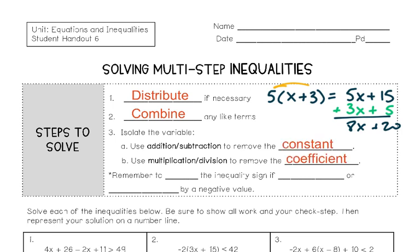The first two steps are to simplify our inequality. After we've simplified as much as we can, our goal is to isolate the variable. We start by undoing any addition or subtraction — so with this example, we'd get rid of the plus 20 with a minus 20. Then we would undo any multiplication or division to remove the coefficient. The coefficient is 8, so we'd divide by 8. We have to go in that order to isolate the variable.